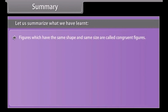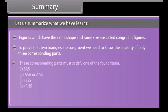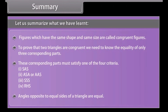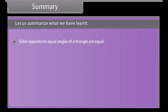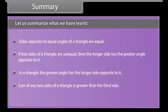Let us summarise what we have learnt. Figures which have the same shape and same size are called congruent figures. To prove that two triangles are congruent, we need to know the equality of only three corresponding parts. These corresponding parts must satisfy one of the four criteria: 1. SAS, 2. ASA, 3. SSS, 4. RHS. Angles opposite to equal sides of a triangle are equal. Sides opposite to equal angles of a triangle are equal. If two sides of a triangle are unequal, then the longer side has the greater angle opposite to it. In a triangle, the greater angle has the longer side opposite to it. The sum of any two sides of a triangle is greater than the third side.